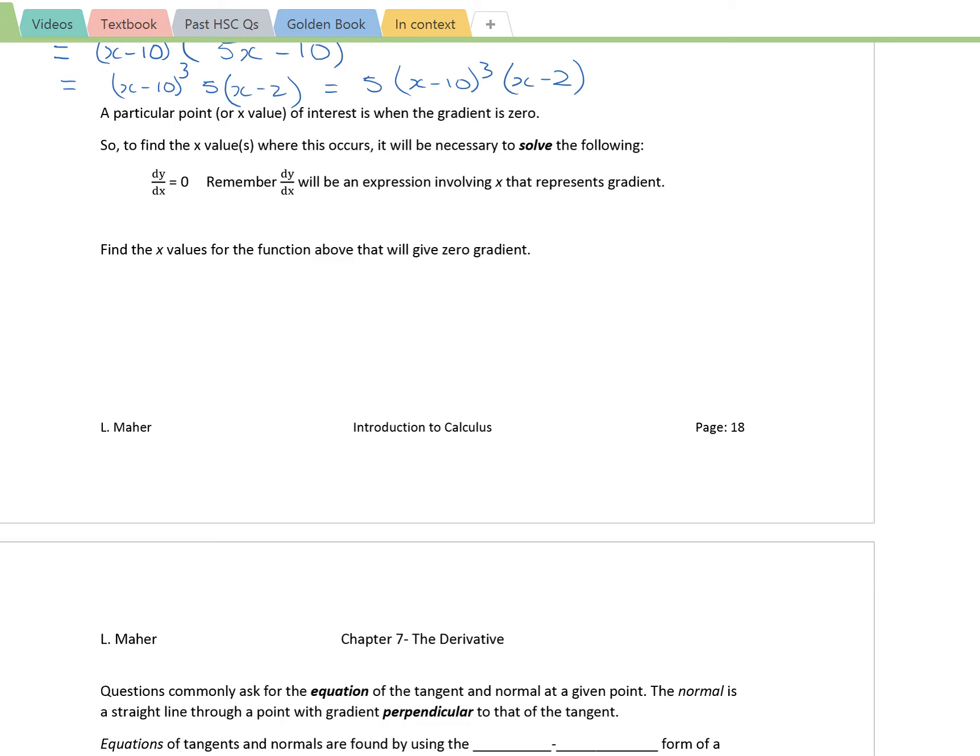So many other things stay the same as well. That expression you're getting, the derivative that you're getting as a result of using the product rule, still represents the gradient. You will still need to know the x value that you're at on your curve if you want to know the actual size of the gradient.